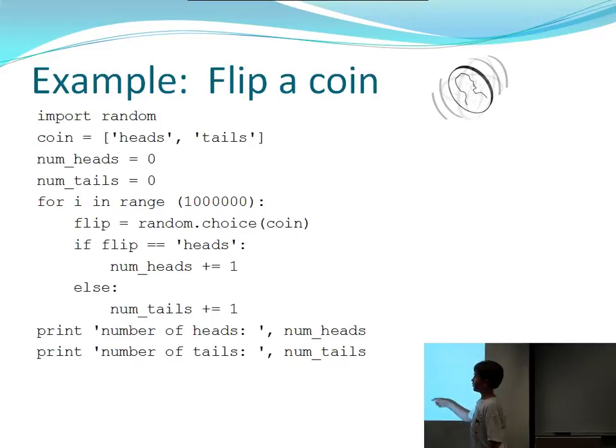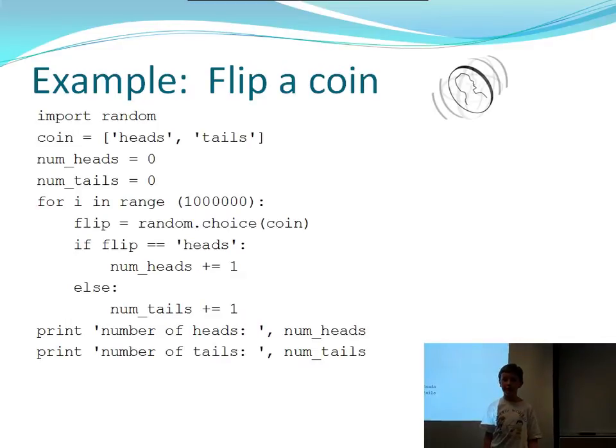So then I'm going to loop one million times, flip it once and get a random choice between heads and tails. And if it's heads, then put number of heads plus one. And if it isn't, then you add one to the number of tails. That way you can keep a running total of how many heads you have and how many tails you have. Then at the end you can just print the number of heads and number of tails.